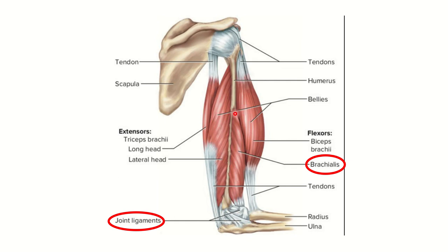Brachialis arises from the humerus, inserts into the ulnar tuberosity, and some fibers insert into the joint capsule. In contrast, biceps brachii arises from above, passes just anterior to brachialis, and inserts into the radial tuberosity. Therefore, brachialis is the deepest muscle on the anterior surface of the humerus and elbow joint, with some fibers inserting into the joint ligament of the elbow joint.